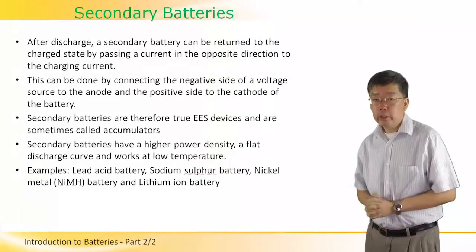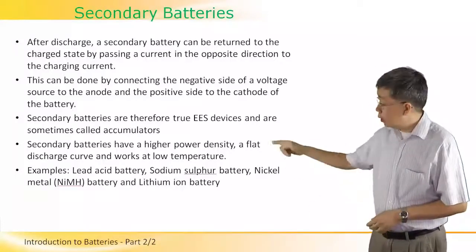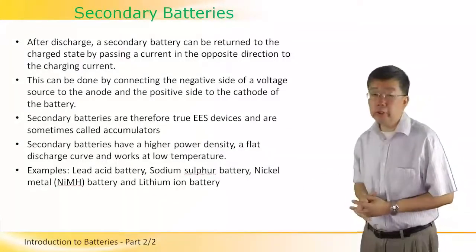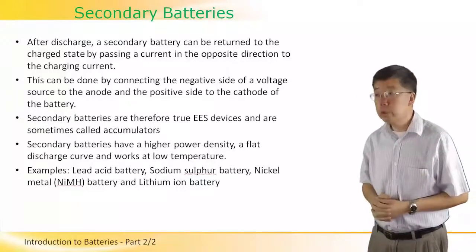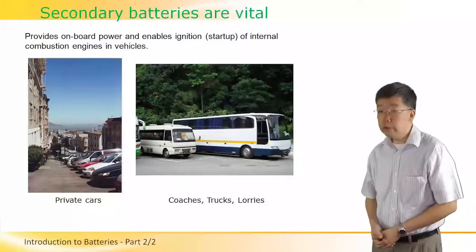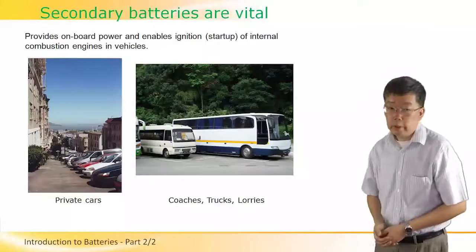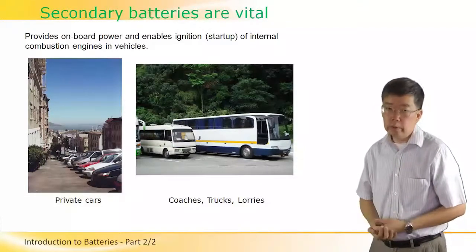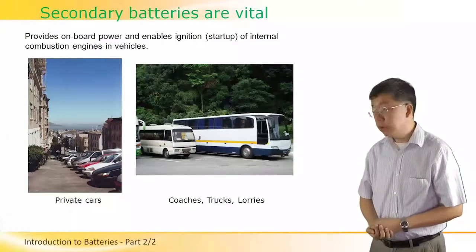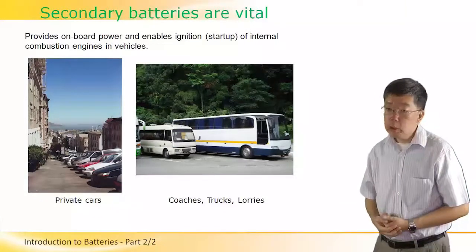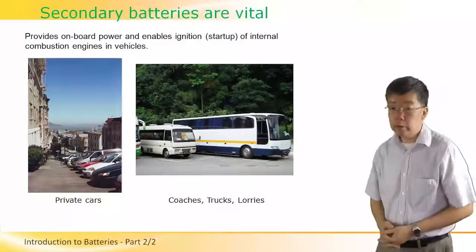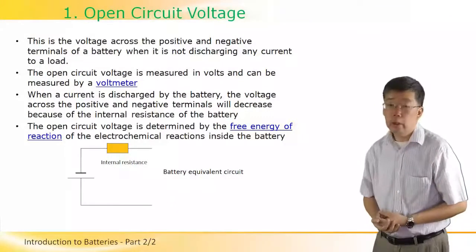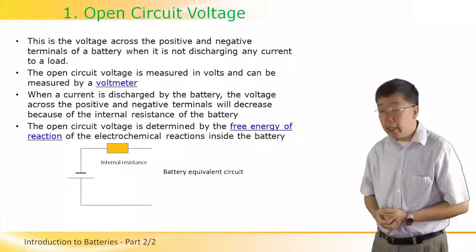Secondary batteries have several key characteristics: they have good power density, a relatively flat discharge curve, and can operate at low temperatures. The lead-acid battery, as a type of secondary battery, provides all the on-board power and the power to start up the internal combustion engine in both private vehicles and diesel-driven trucks and lorries.